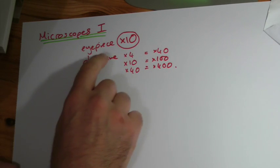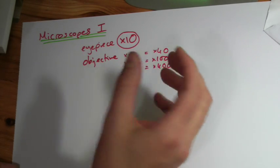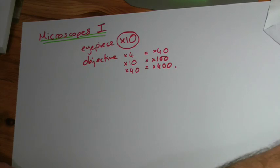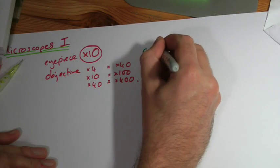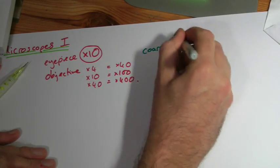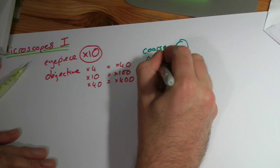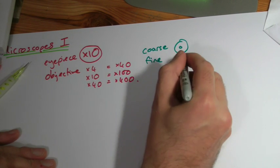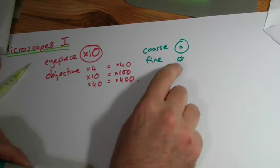You would always start focusing using the lowest objective lens first, it'll be the easiest to get the focus on. You'll then use the two focusing knobs, which are the coarse one, which is the bigger one of the two, so you can wind your way down quickly. And then the fine focusing one, which will be the smaller one, sometimes it even has a little scale on it, which will allow you to zoom in a little bit more.